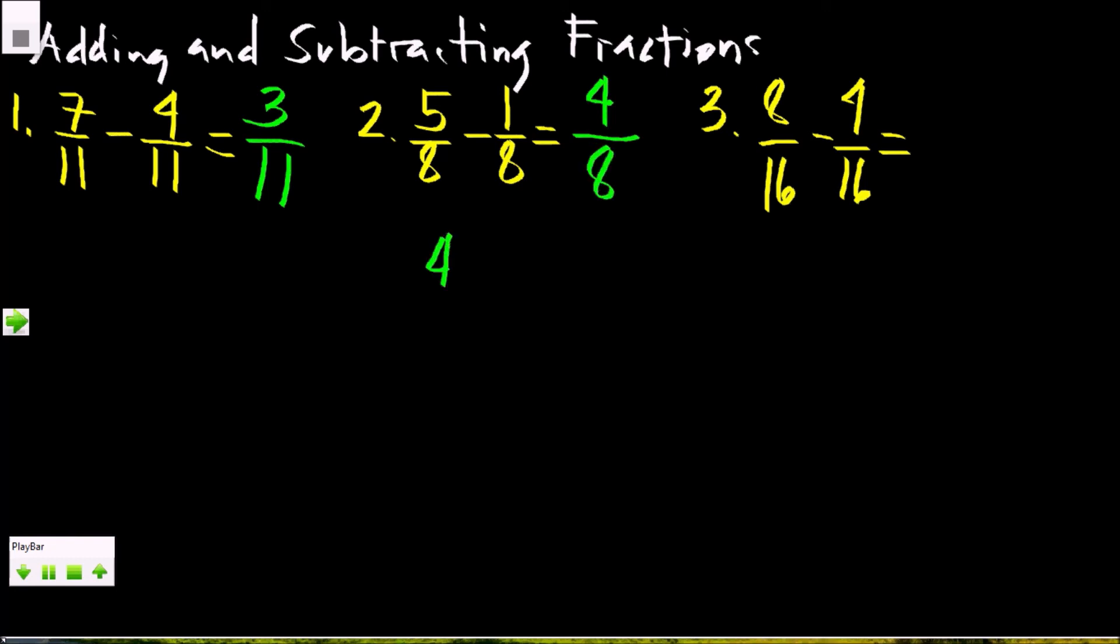5 minus 1 is 4, copy the common denominator, 8. The 4/8 can be simplified by GCF number 4. 4 divided by 4 is 1, 8 divided by 4 is 2. So the lowest term is 1/2.